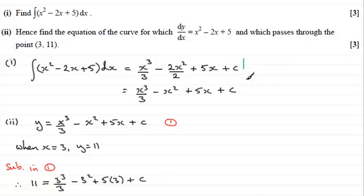So if we just border this off and come down here. So therefore, what we've got is 11 equals, and here we've got 3 cubed, which is 27 divided by 3, which is going to be 9. 9 minus 9 here, that's 0. So you've just got 5 times 15 plus c. And if I take 15 from both sides, I therefore have c equals 11 minus 15, which is going to be minus 4.